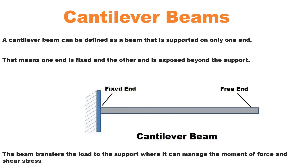A cantilever beam is a beam that is supported only on one end. That means one end is fixed and the other end is exposed beyond the support. The beam transfers the load to the support, where it manages the moment of force and shear stresses.